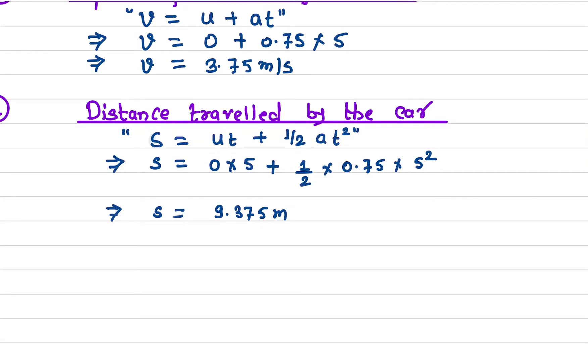It doesn't matter which equation you use, you'll still get the same answer. s is the distance, the initial velocity is zero, the acceleration is 0.75, and t is the time which is 5.